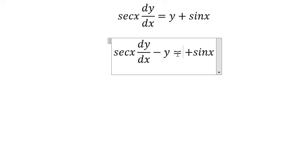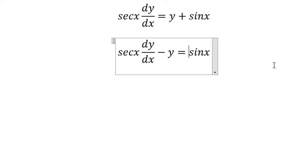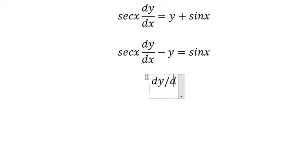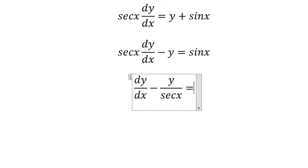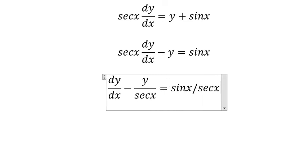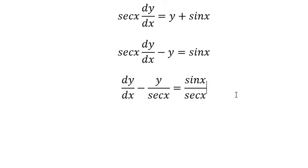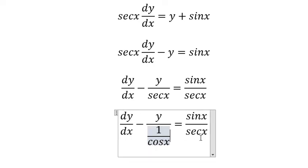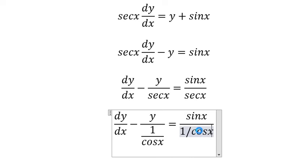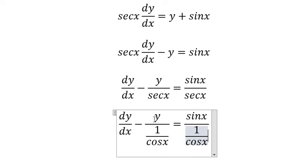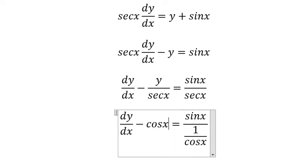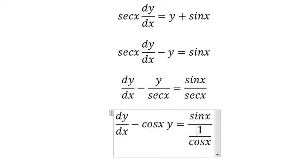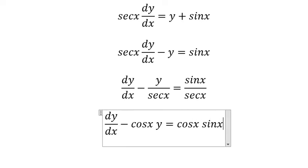Next, we divide both sides with secant of x. Secant of x is about one over cosine x. In this situation you get about cosine x times y, and this one you get about cosine x times sin x.